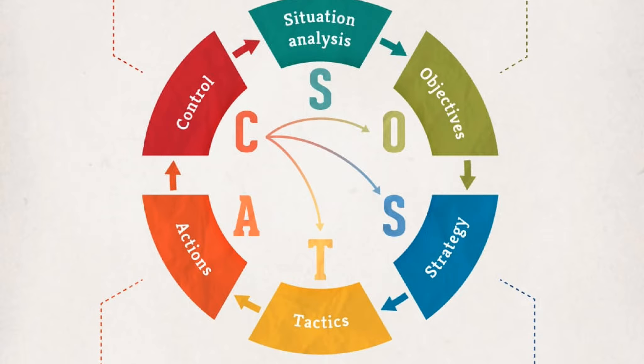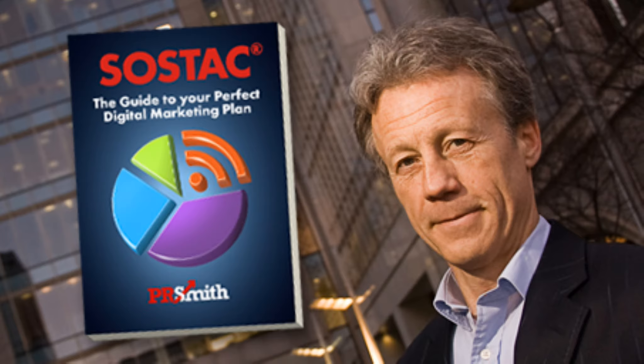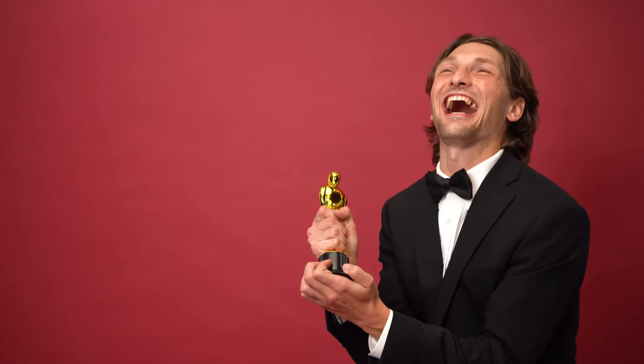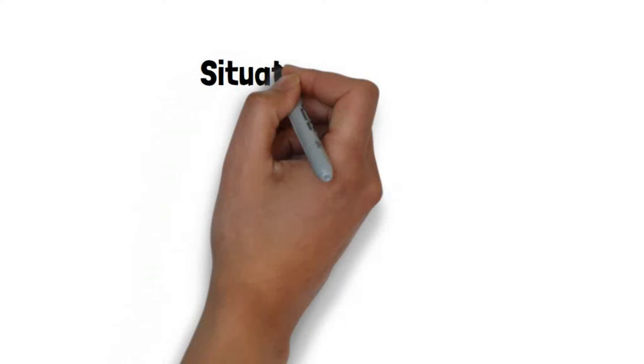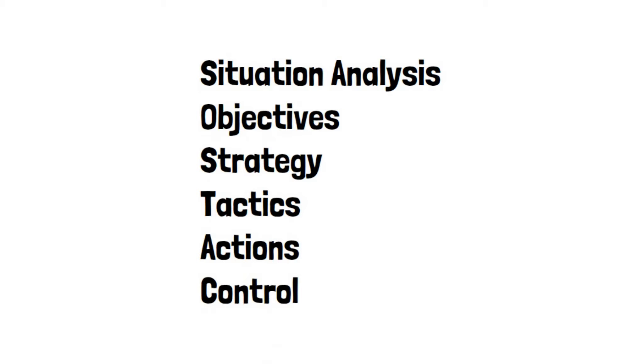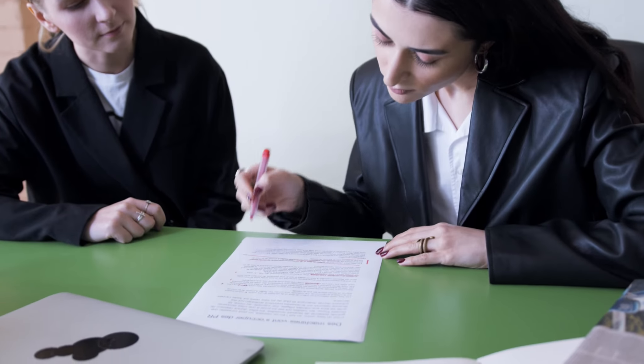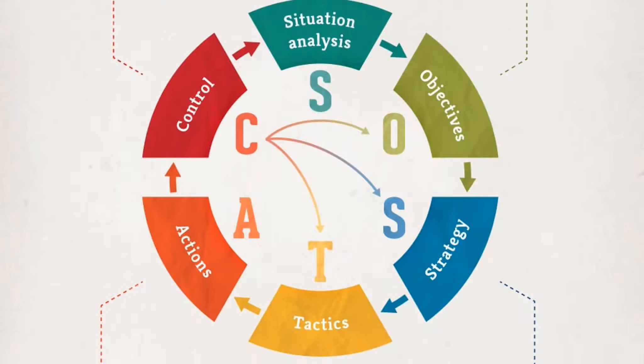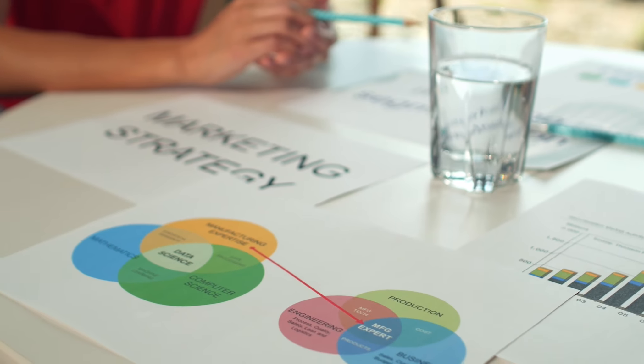Sostak is a planning system created in the 1990s by writer and speaker P.R. Smith. It's designed to assist small business owners in achieving their business goals by helping organize and optimize each step of the business process. Sostak is an acronym that stands for Situation Analysis, Objectives, Strategy, Tactics, Actions, and Control. When you use this model in that order, you'll not only be able to plan for the future but also adjust and improve your pre-existing business concepts. Each step allows you to think intuitively about each aspect of your business and discover new ways to improve each component. Let's take a deeper look at how Sostak works and how you'll be able to begin using it to plan your small business.